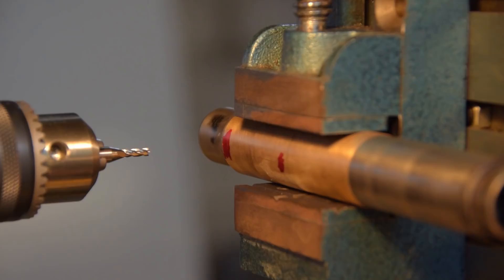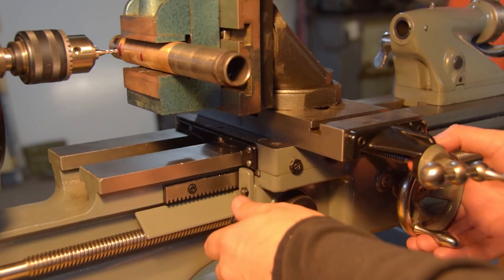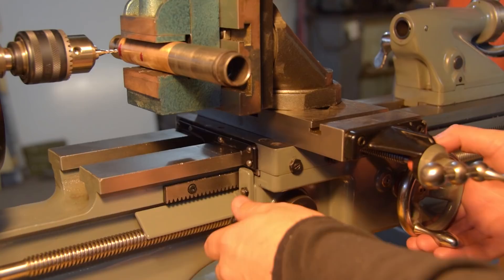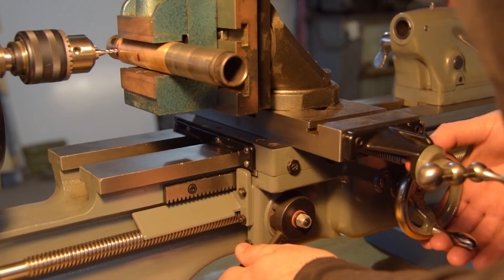These milling attachments enable you to do things that otherwise wouldn't be possible, but it is very precarious compared to using an actual mill. There is a lot of leverage hanging out away from the cross slide, which limits you to very light cuts.